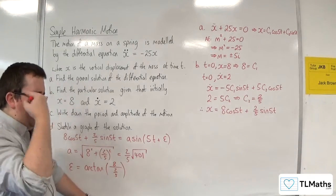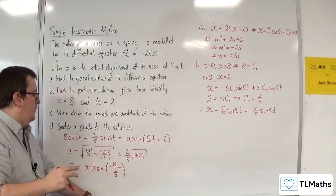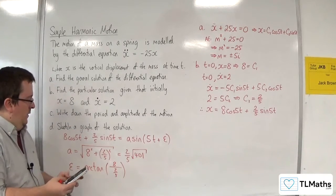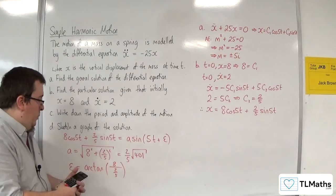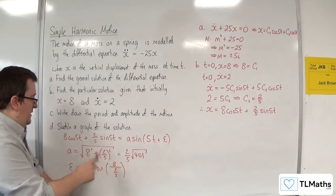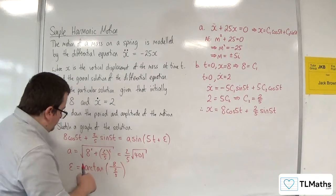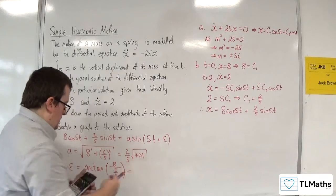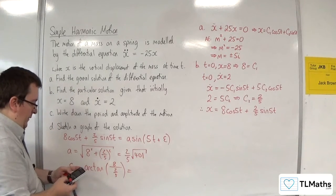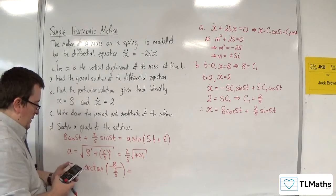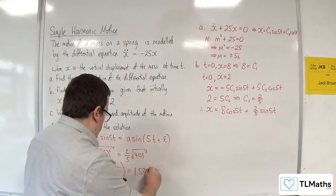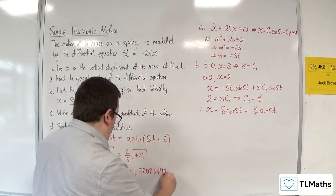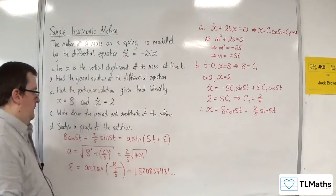So 8 divided by 2/5 is 20. So this is arc tan of 20. Now make sure you're in radians. So we should get 1.520837931.